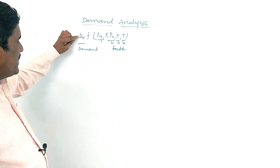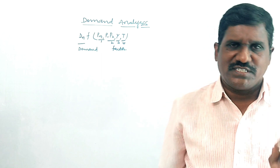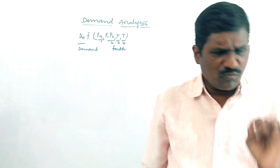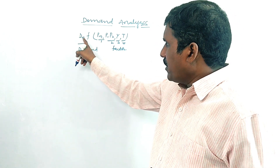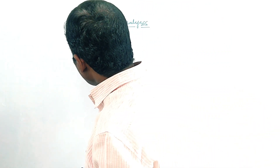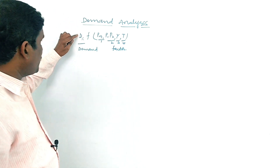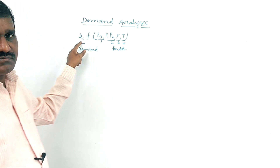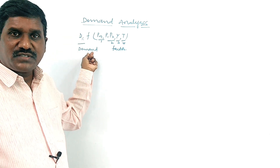Once again — d means demand. Demand means how many goods a consumer is ready to purchase. Demand means to buy or purchase. It is dn — demand of commodity n. N means example good; for example, you take x, I take n. So x good — he is going to demand, he is going to purchase x good. Demand of commodity x means to purchase or to buy.